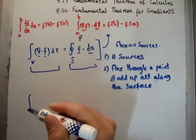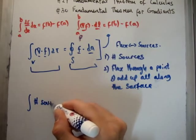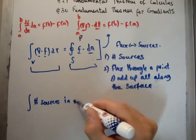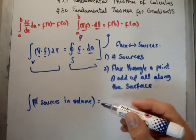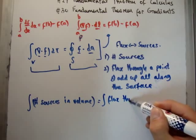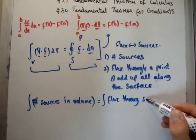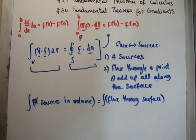So essentially what we have, this integral can be written as the integral, the number of sources in volume, the number of sources in the volume, is equal to flux through surface. Okay? And that's why it's called the divergence theorem.